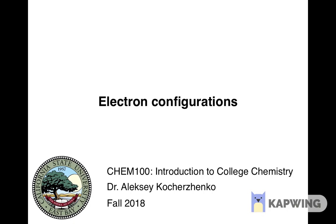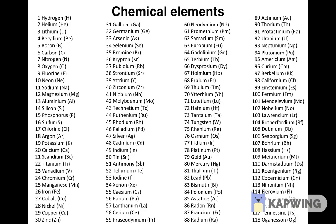Today we know 118 chemical elements. The atoms of these various elements differ in the number of protons in their nuclei, known as the atomic number. Here is a list of all elements known today in the order of their atomic numbers.